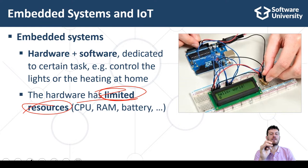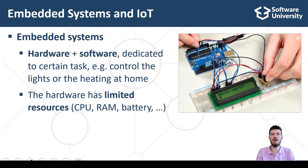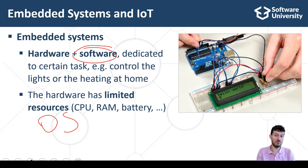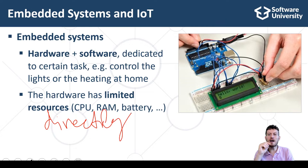Most embedded systems run on a microcontroller or mini computer and can be powered by a power adapter or battery. They are controlled by software written by developers. Some embedded systems have an operating system with processes and file systems, running on more powerful hardware for complex calculations. Others execute your program directly without an operating system.